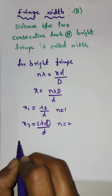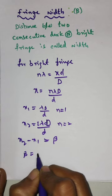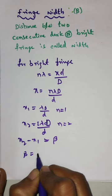Here beta is the fringe width, defined as the distance between consecutive fringes. So beta = x₂ - x₁. Beta = 2λD/d - λD/d, so we get beta = λD/d.